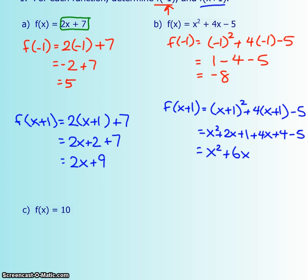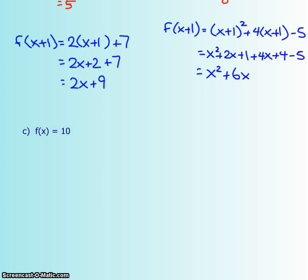Those are pretty straightforward. Now the last one is one that's a little bit trickier. If I wanted f at negative 1, there is nowhere in the function itself where there's an x. So I can't sub negative 1 into anything, therefore my answer is 10. The same goes for if I have f at x plus 1, well again, there's nowhere I can sub in the x plus 1, because there's no x in the function itself. So again, my answer is 10.